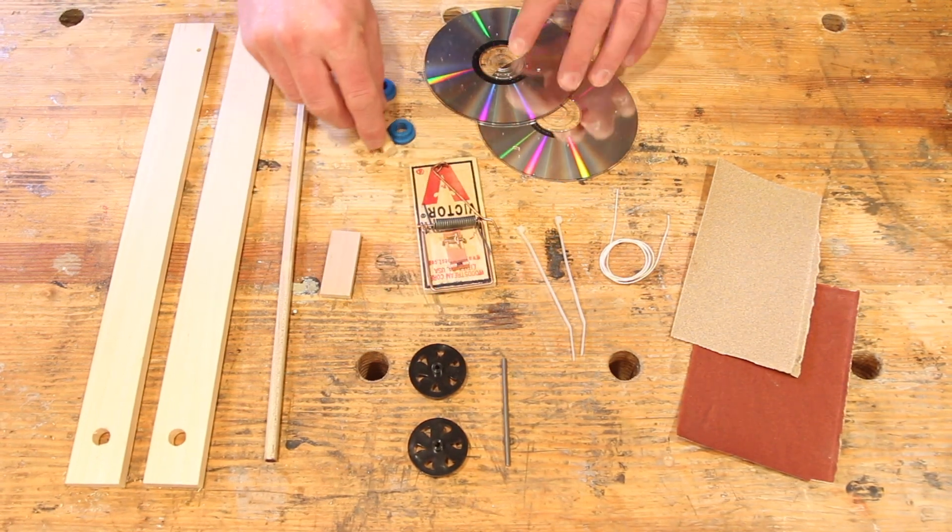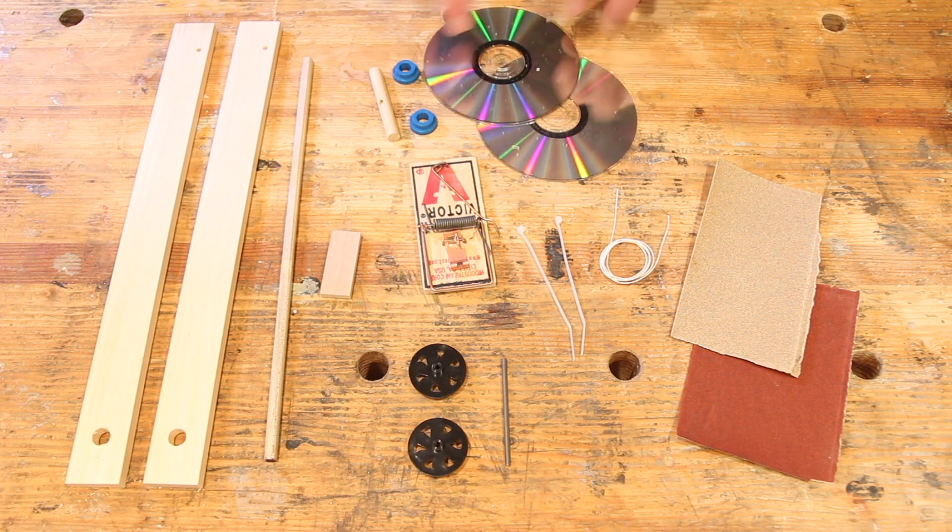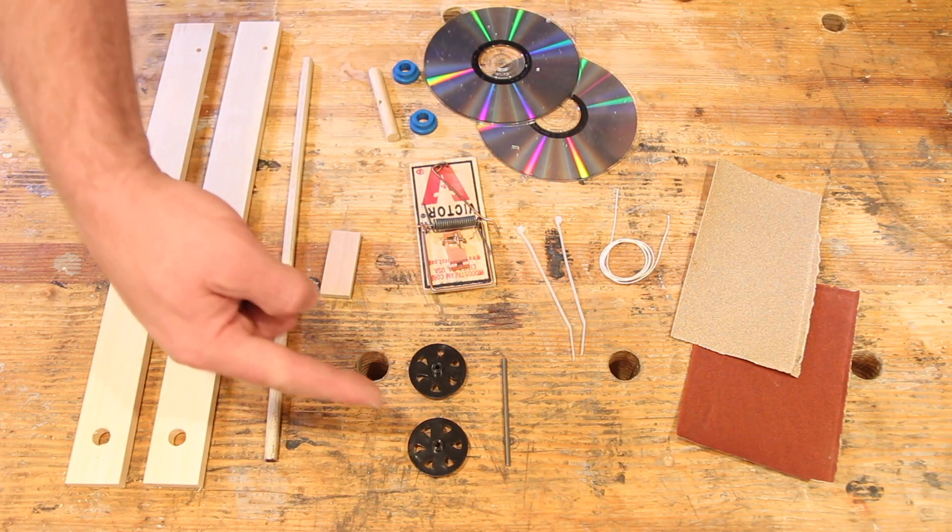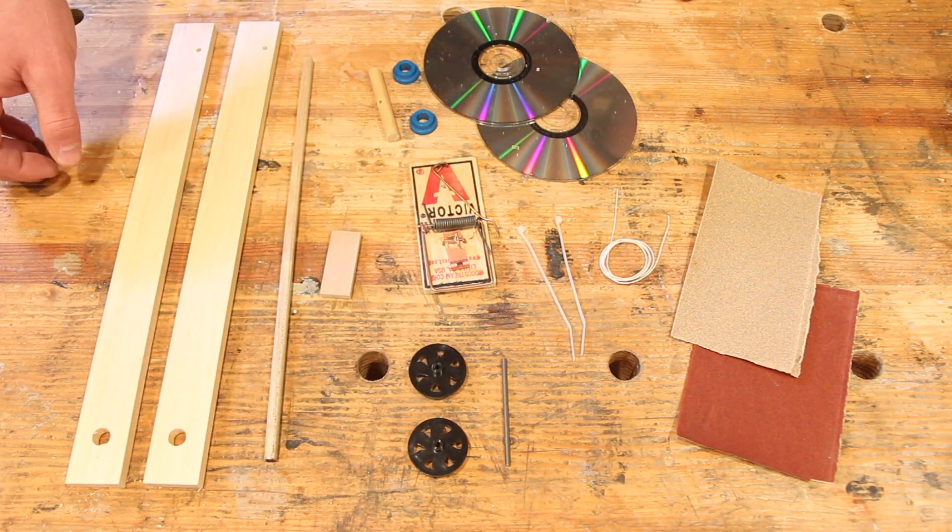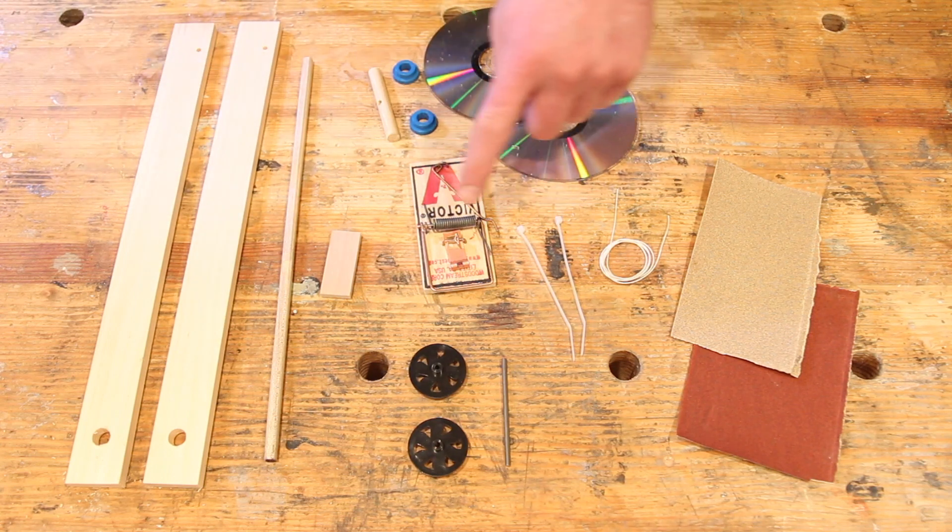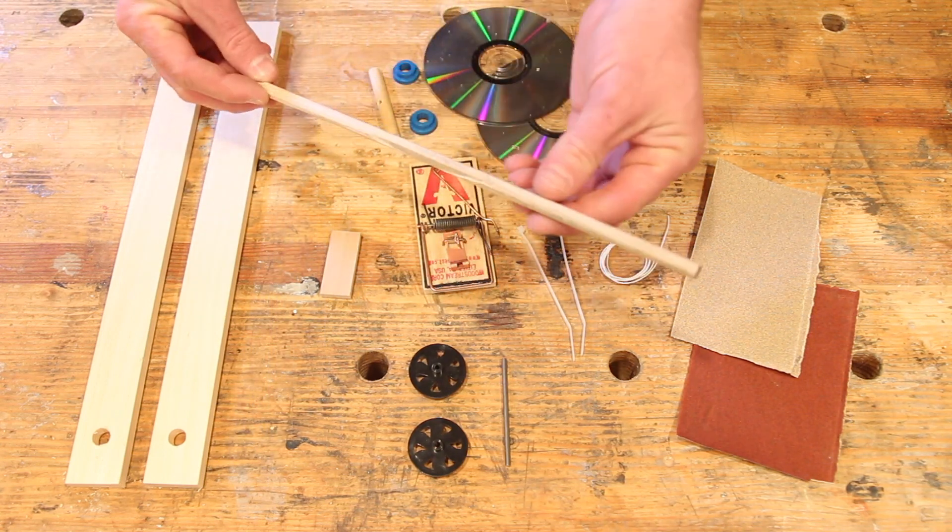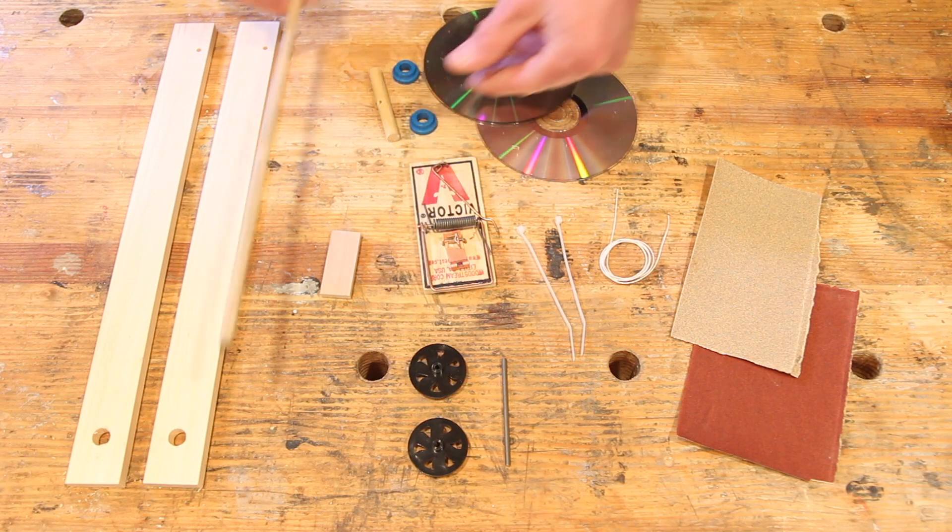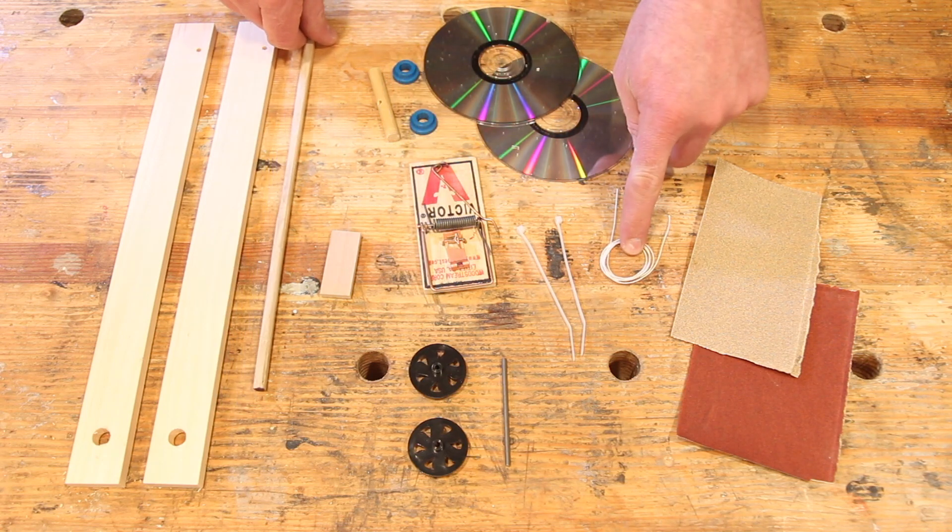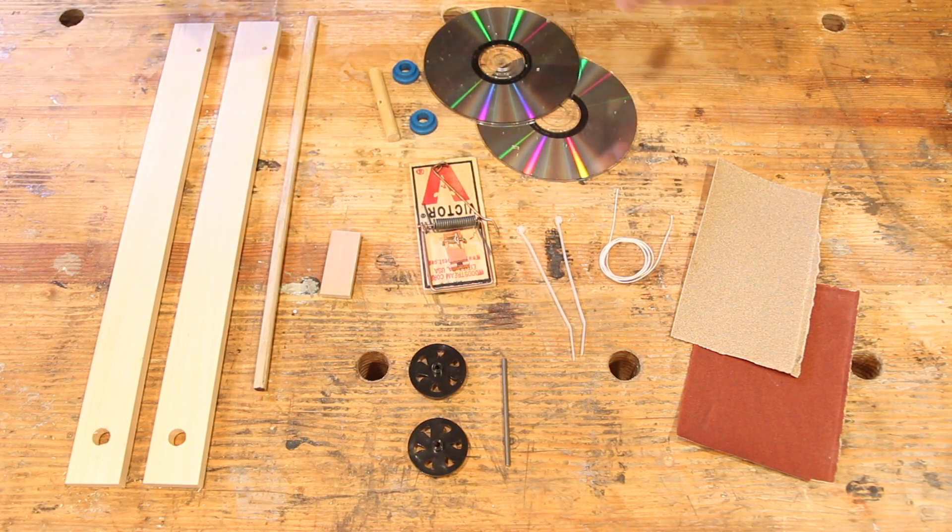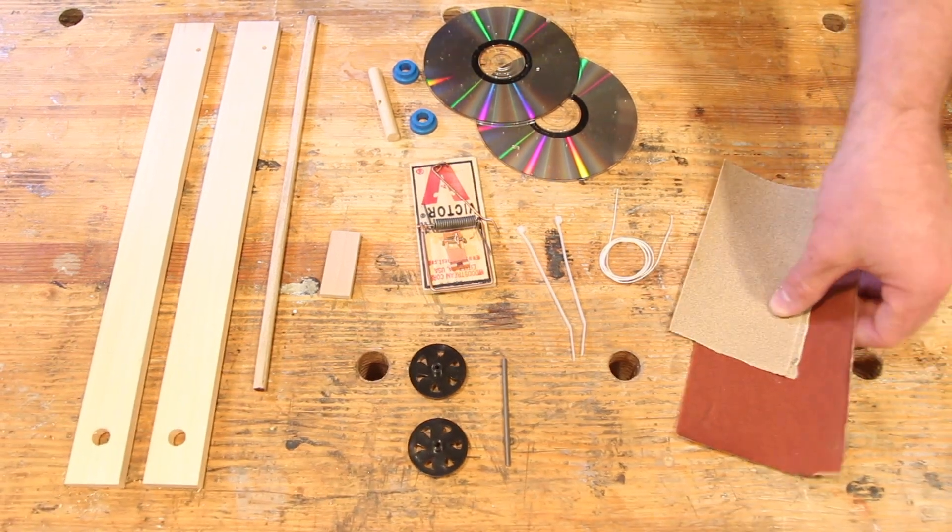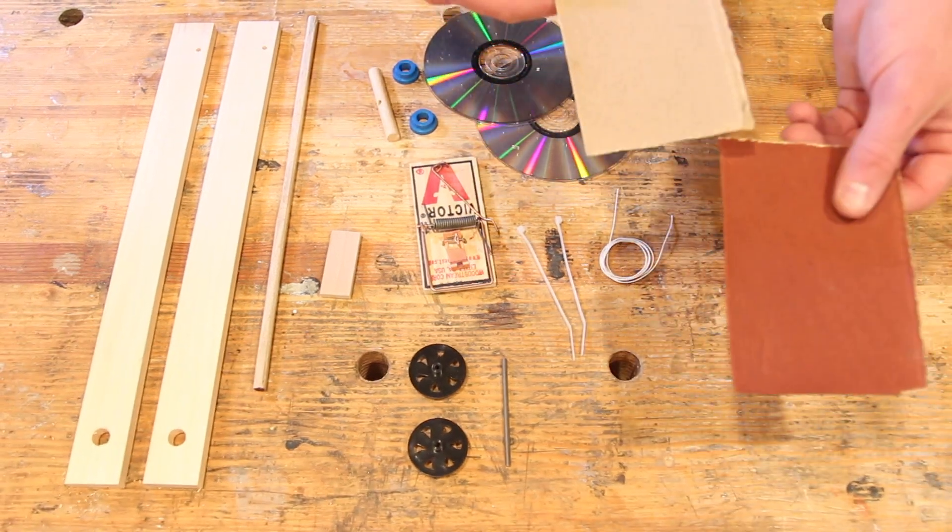These parts back here are your back wheels and axle and your front wheels and axle. You also have a couple of zip ties to attach this lever arm to the mousetrap and some string that makes it all work. You're also going to have a couple of pieces of sandpaper. You'll have a rough and a fine one.